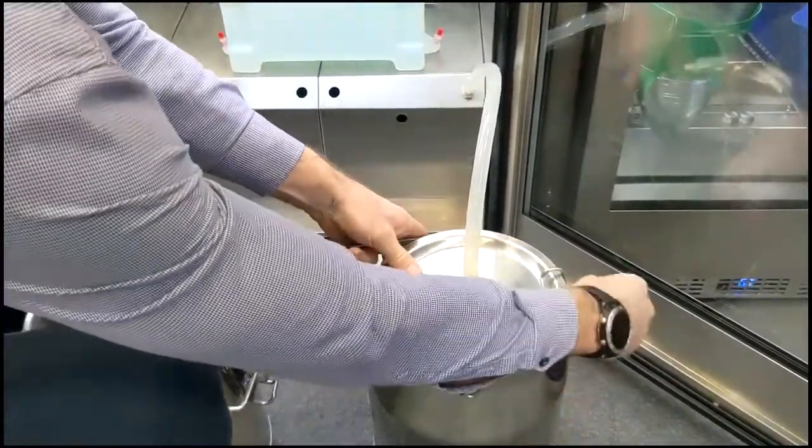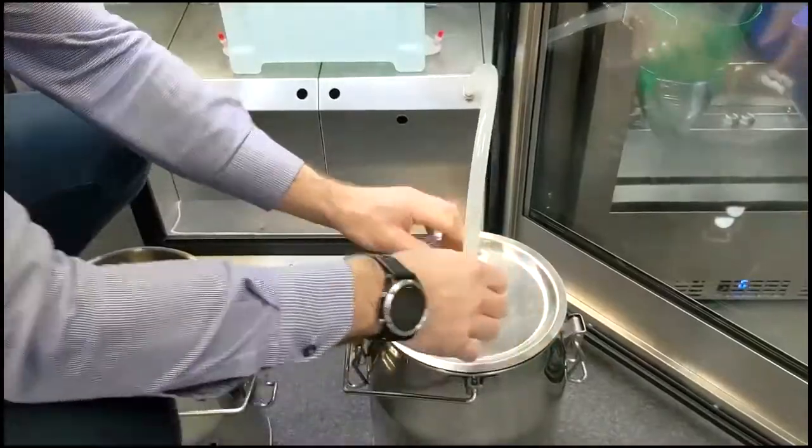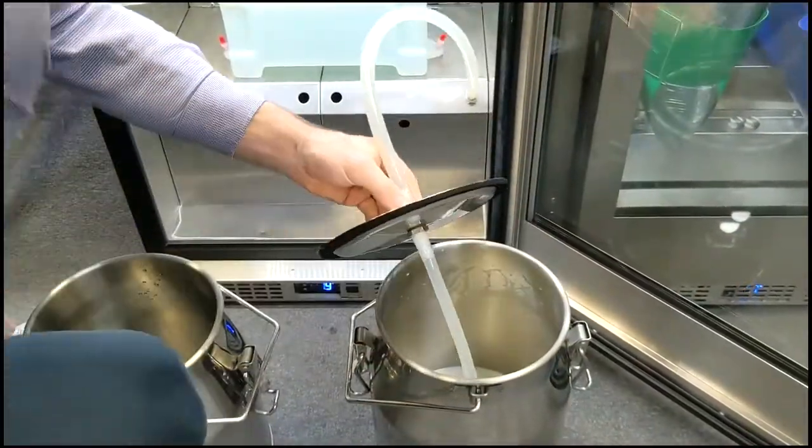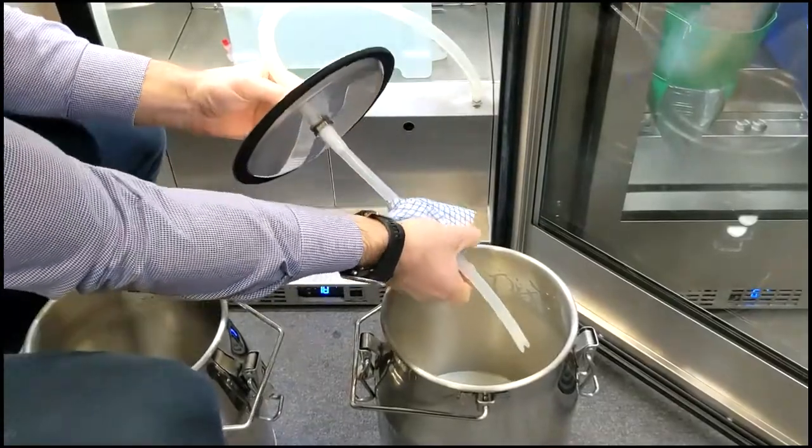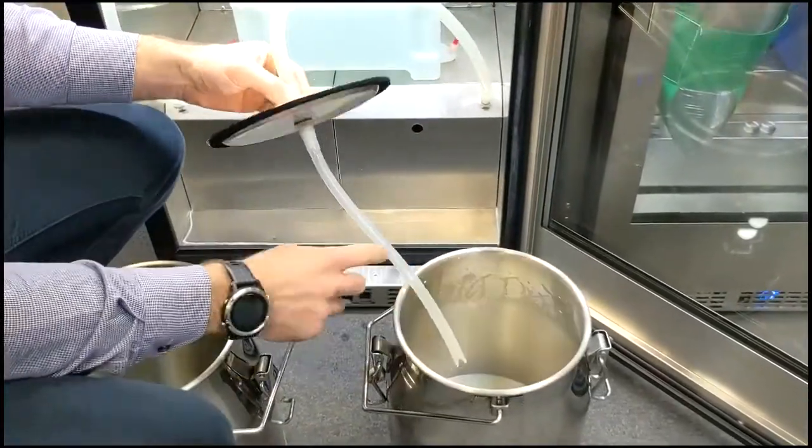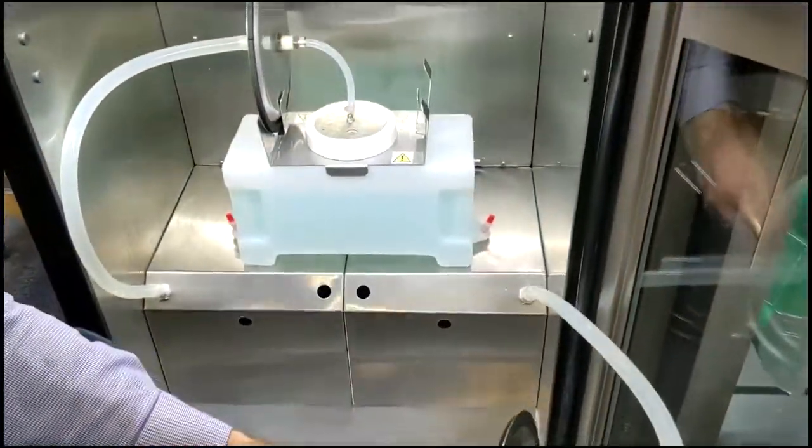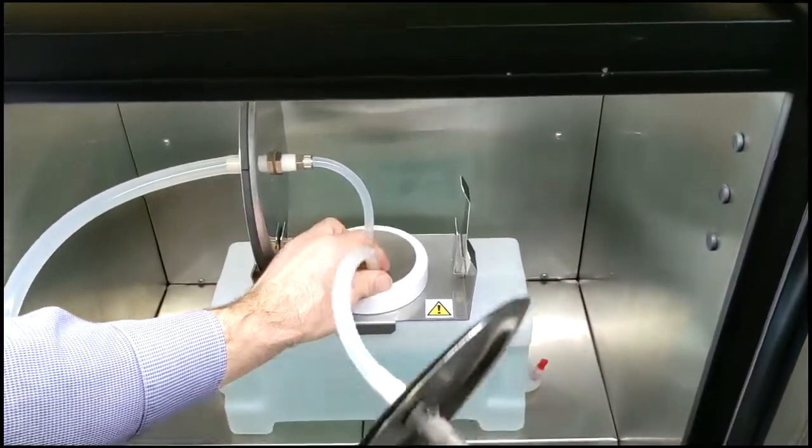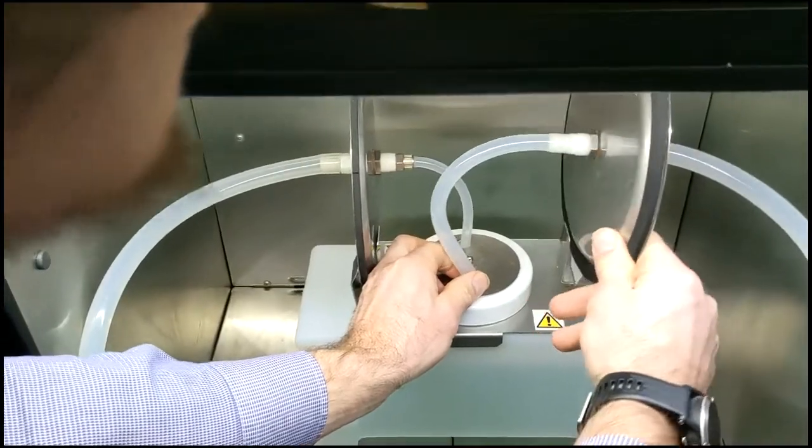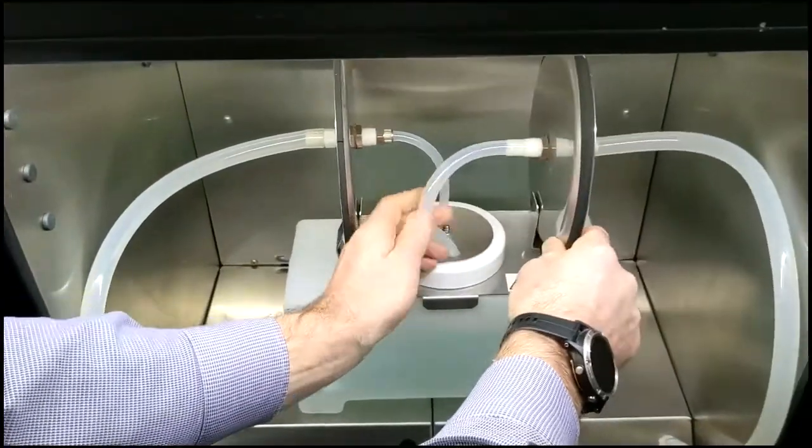Then repeat that with the second churn. Make sure you wipe the tube well so you don't get drips of milk everywhere. Push the tube down as far as you can into the cleaning tank.